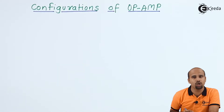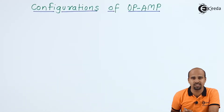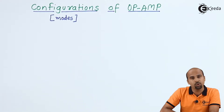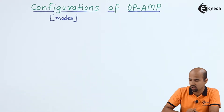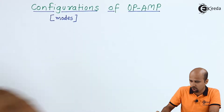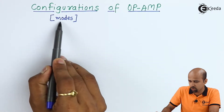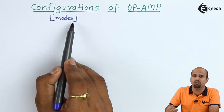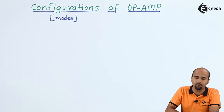Now in the configurations of operational amplifiers, there are three basic modes. Either you can say configurations of operational amplifier or else you can use the word modes of operational amplifier.